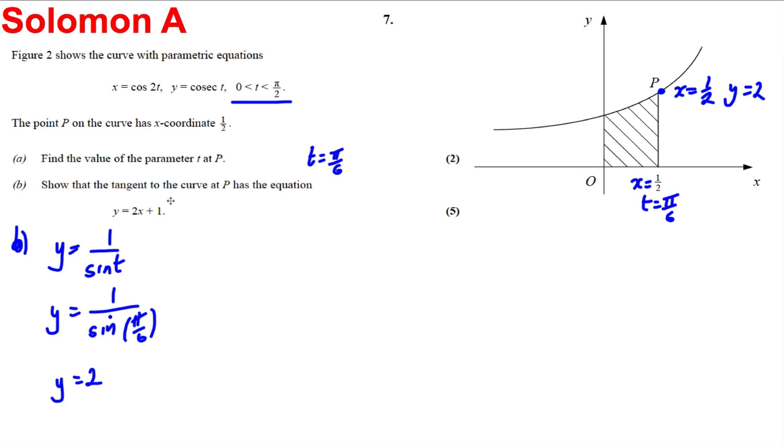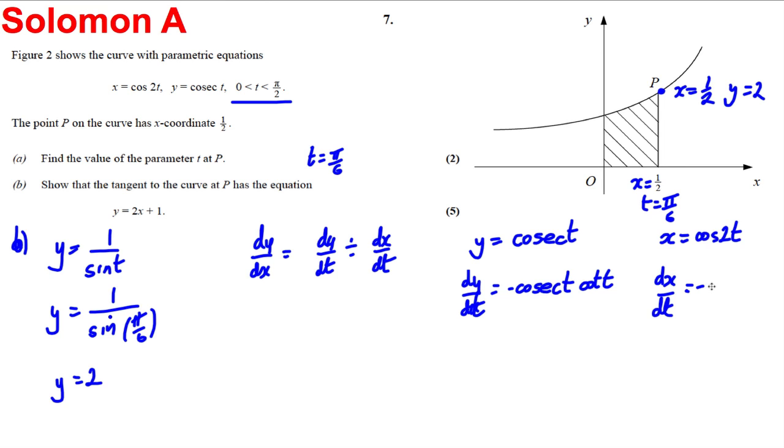So let's use, we want to find the tangent as well, so we're going to need dy by dx at that point. So we know that dy by dx is going to be equal to dy by dt divided by dx by dt. So y is equal to cosec t, which is sine t to the negative 1, and dy by dx is the differential of cosec. If x is equal to cos of 2t, then by the chain rule, dx by dt is going to equal negative 2 sine 2t.